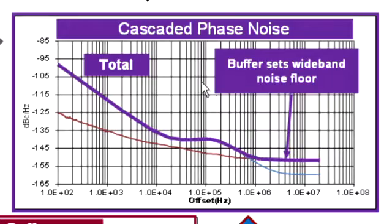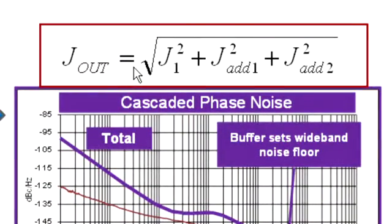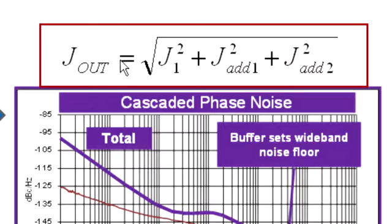The proper way to account for the jitter contributions of all the devices in the chain is shown here in this equation. The total jitter at the output of the chain is equal to the root sum squared jitter of each device in the chain.